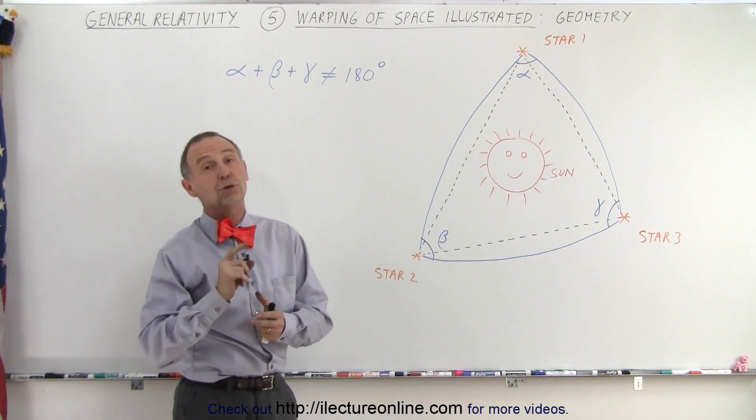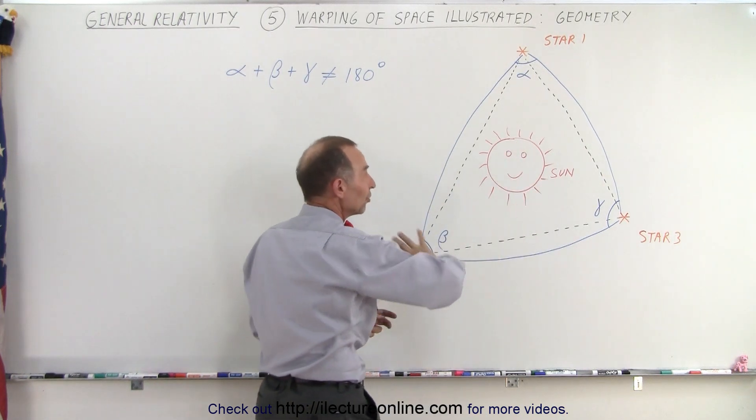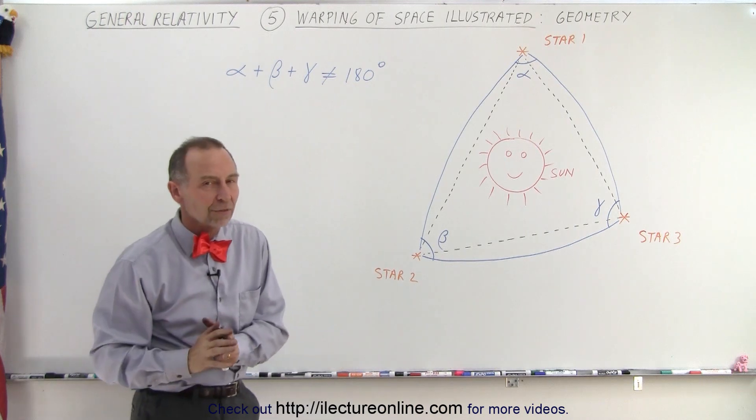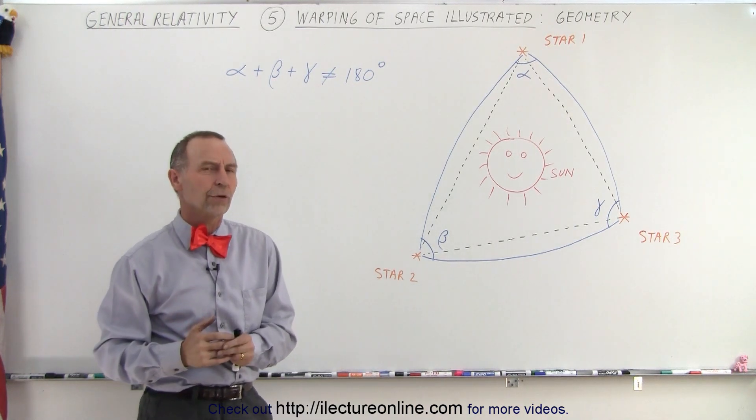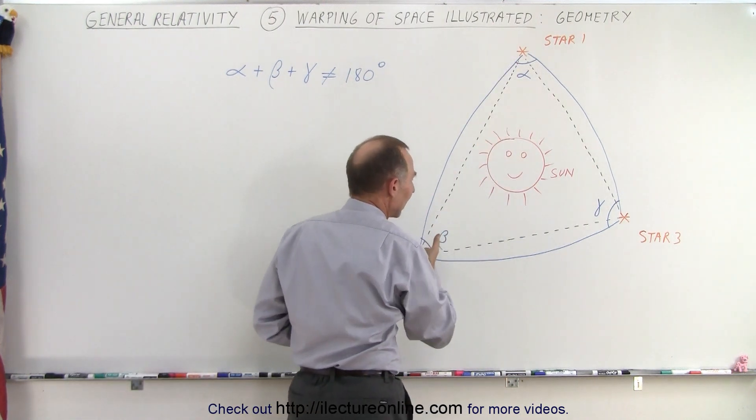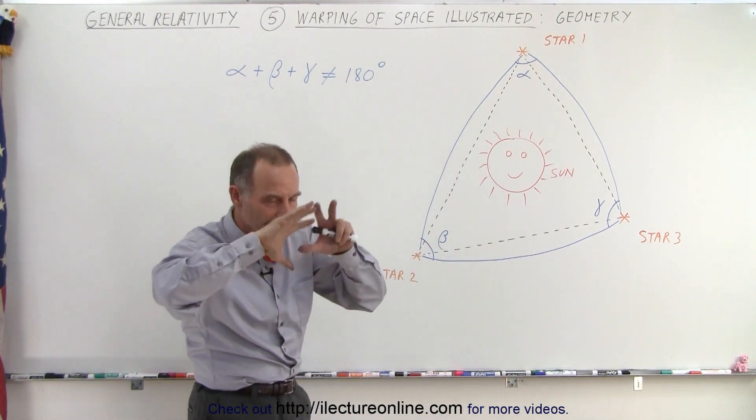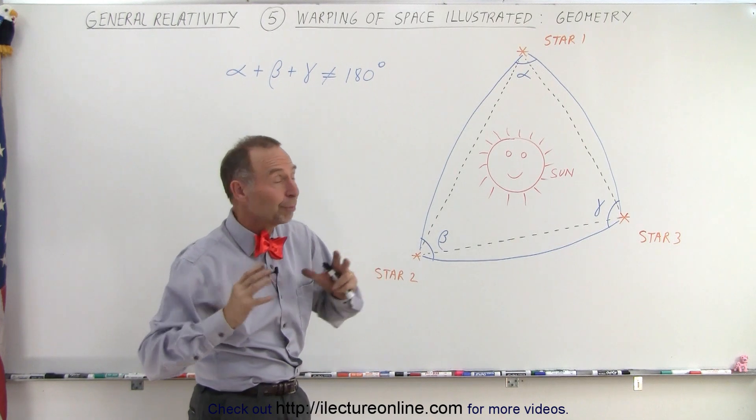Except, they really don't when there's something in the middle. If you take the Sun away and there was nothing in between the three stars, that would indeed be the case. Space would be flat, not curved. But by placing the Sun right here, realizing now that the light must travel past the Sun, we know there's a gravitational field around the Sun. Essentially, there's a curvature of space around the Sun.